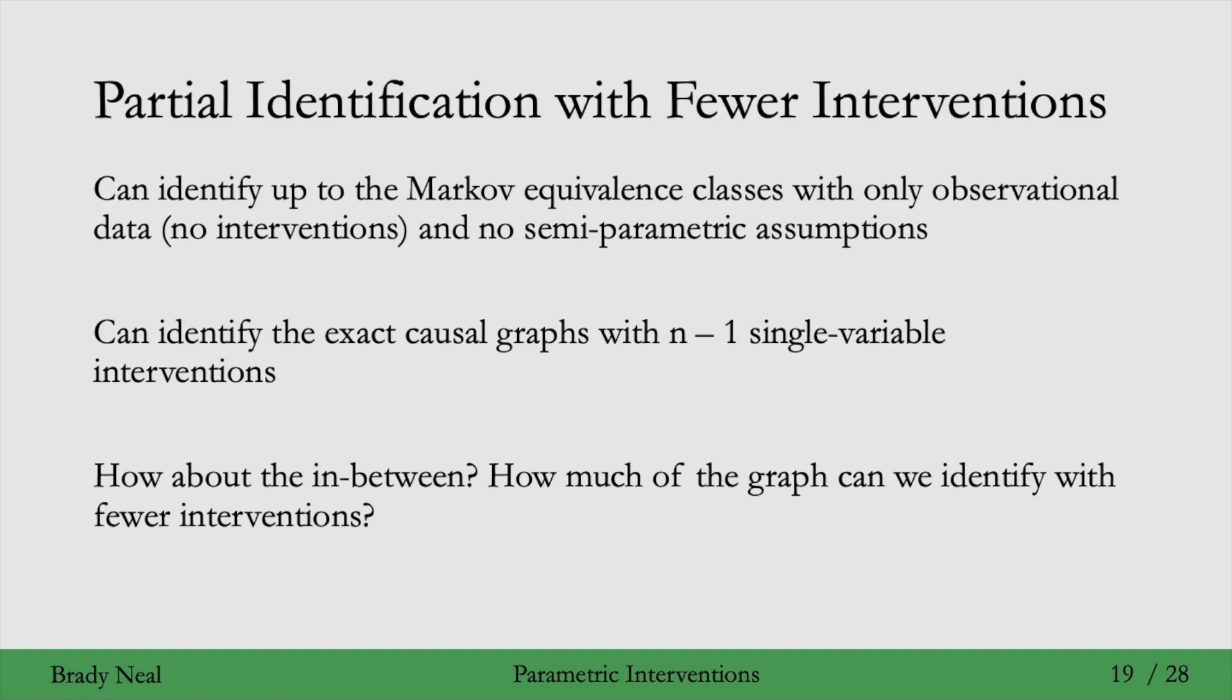This might lead to a Markov equivalence class of many graphs. We know we can whittle that down to a single graph - we can identify the exact graph if we make n-1 single variable parametric interventions. But what if we made fewer interventions? Could we identify not quite the exact causal graph, but some class smaller than the Markov equivalence class? That's what we'll consider now.